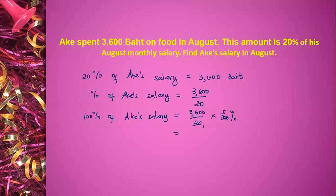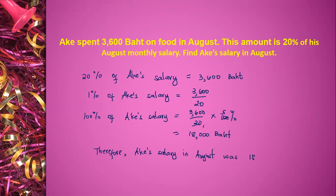And then 5 times 3,600 is equal to 18,000. So therefore, X's salary in August was 18,000 baht.